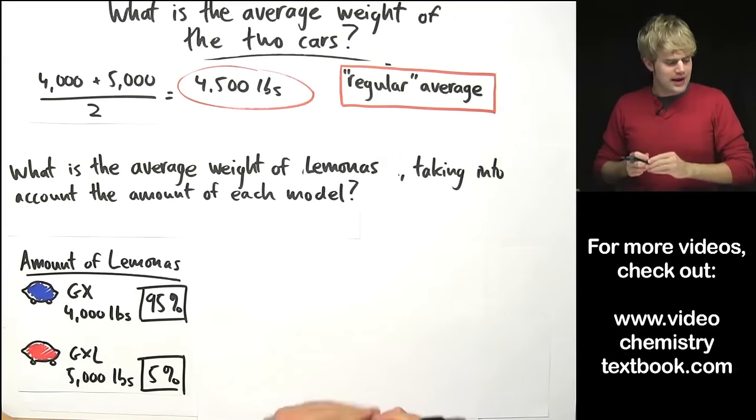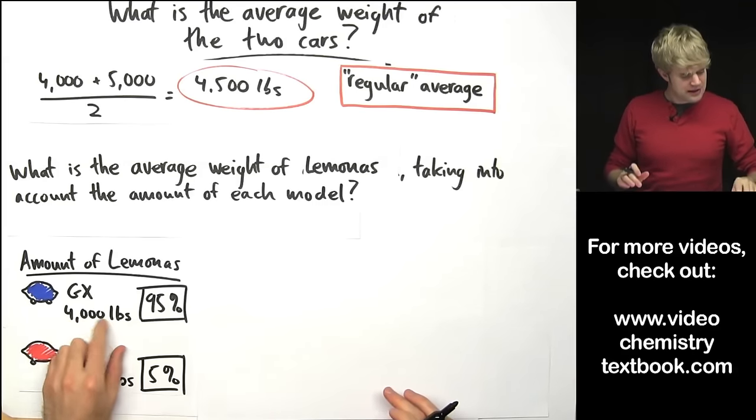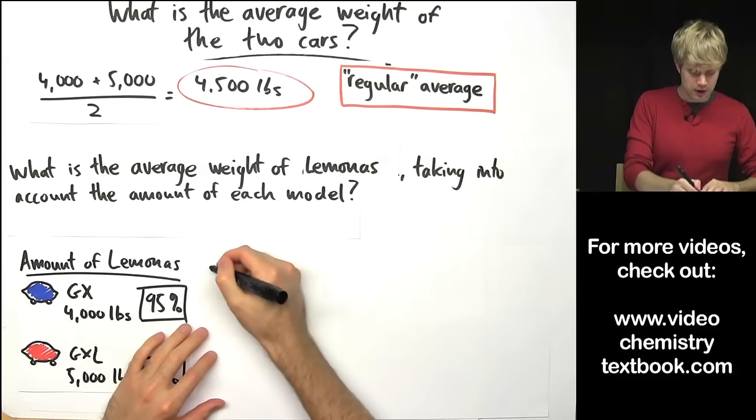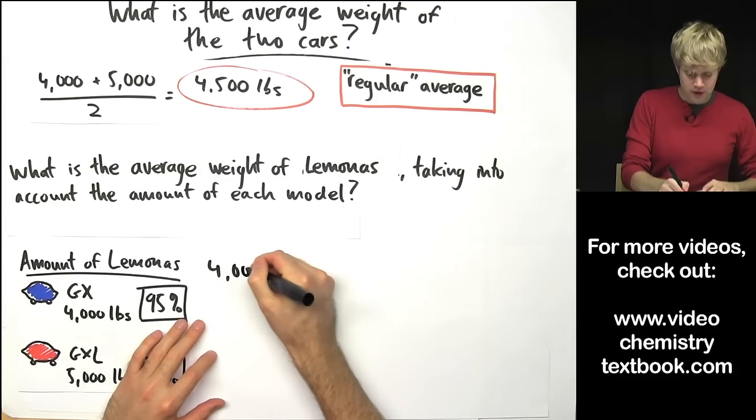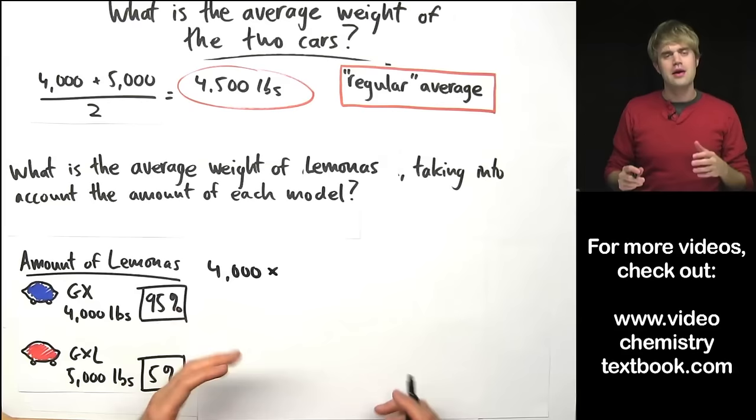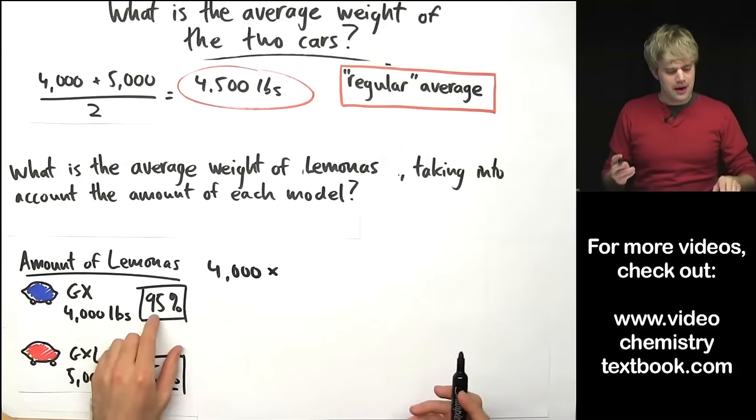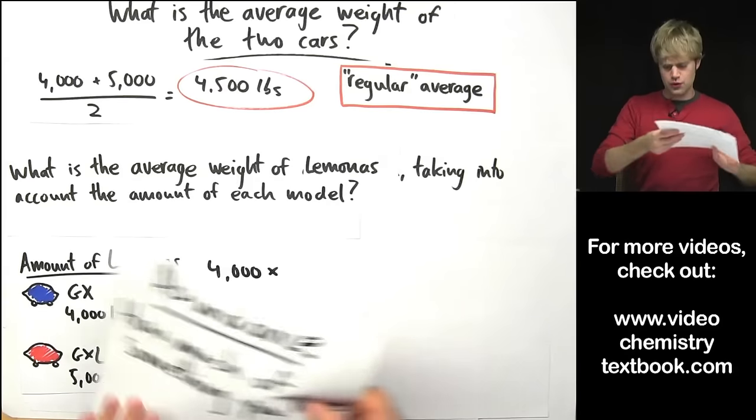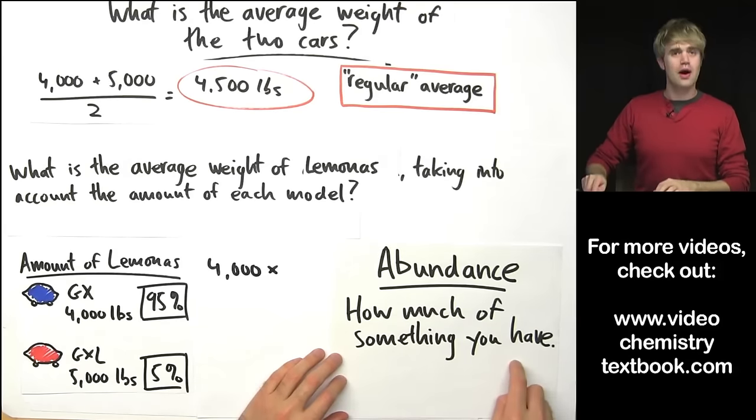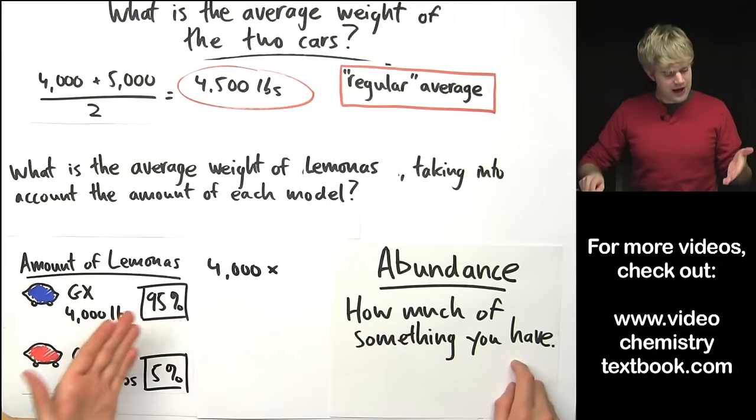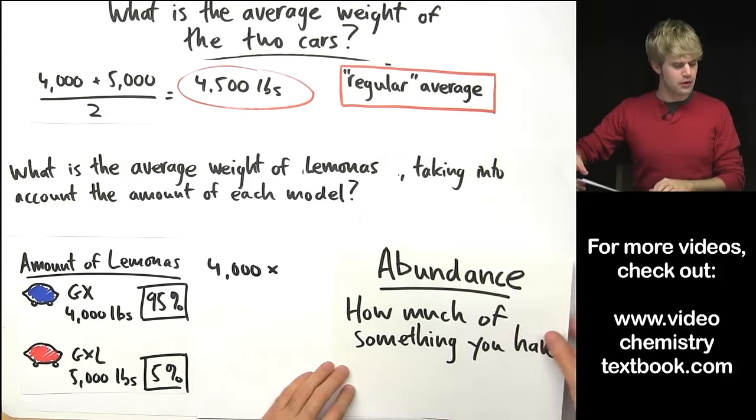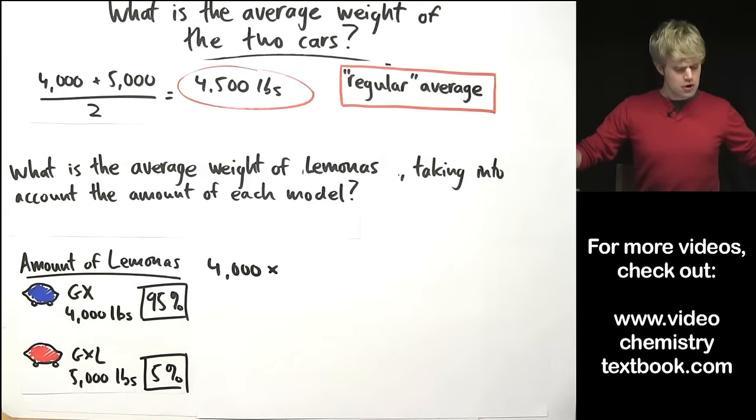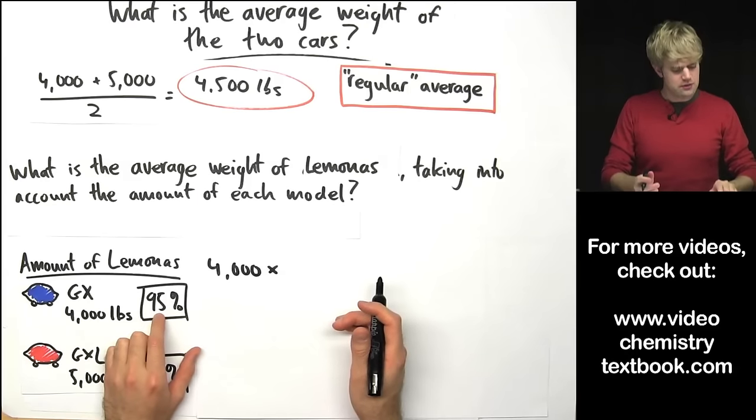So to calculate the weighted average I'm going to take the amount that the Lamonas GX weighs which is 4,000 pounds and then I'm going to multiply it by the percent abundance. Abundance is just a really fancy word that means how much of something you have. So here we have 95% of the total Lamonas are GXs. So I'm going to multiply it by the abundance of the GX.